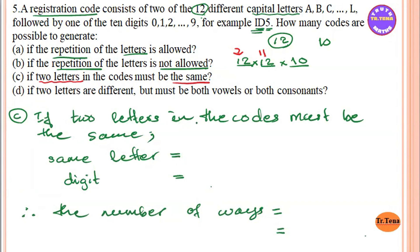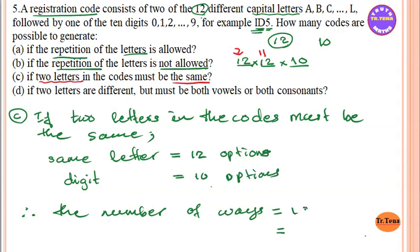If the two letters in the code must be the same, the first letter has 12 options. You can see the digit has 10 options. So the number of codes is 12 × 10.